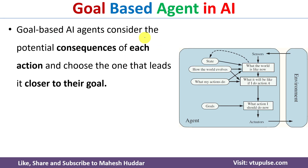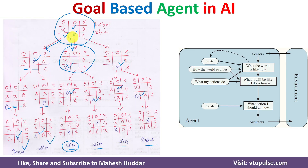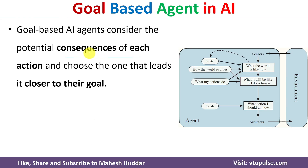Goal-based agents consider the potential consequences of each action — as shown here for each of the possible moves, what are the possibilities such as winning, draw, or losing — and based on those consequences they select an action which will lead to the goal.